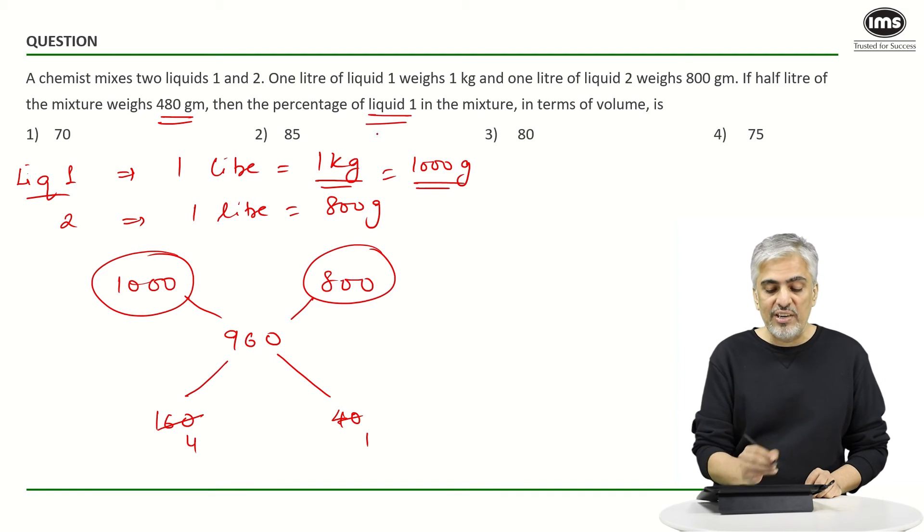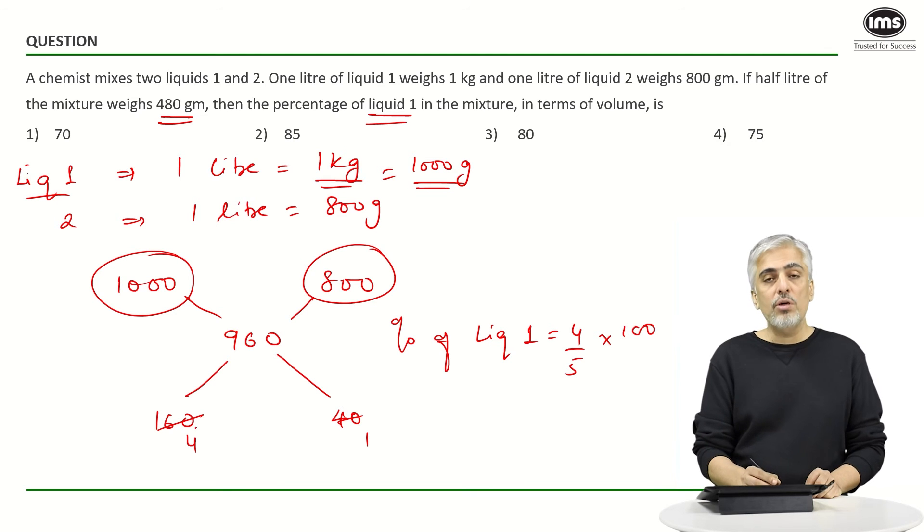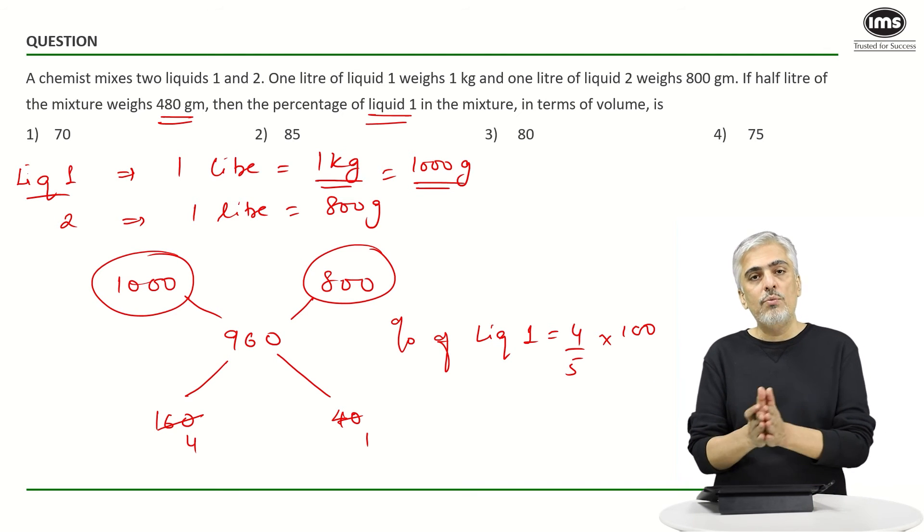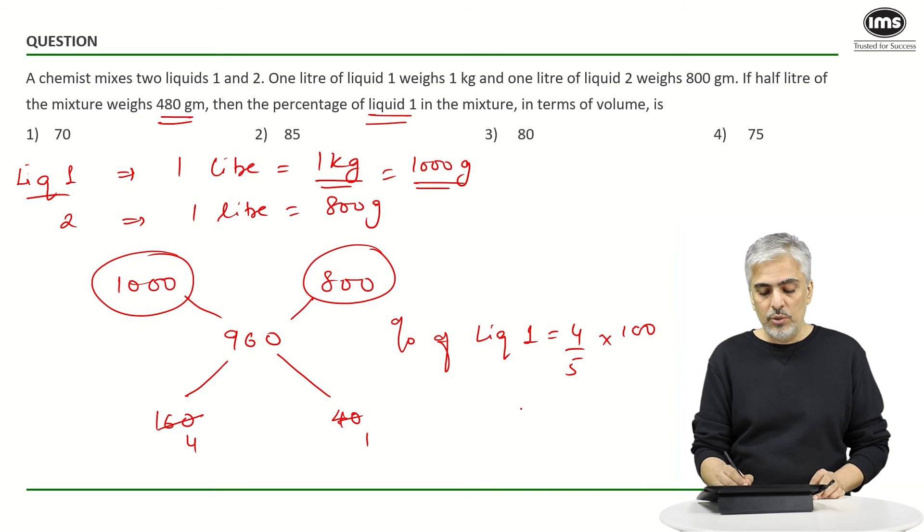What are they asked? They've asked for percentage of liquid 1. So percentage of liquid 1 is 4 out of 5 into 100. 4 is liquid 1, 1 is liquid 2. So 4 out of 5 which becomes 80 percent, which is the third option.